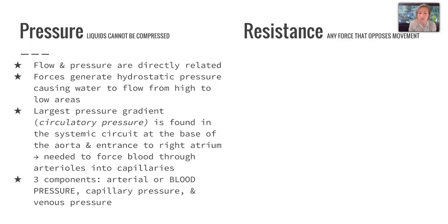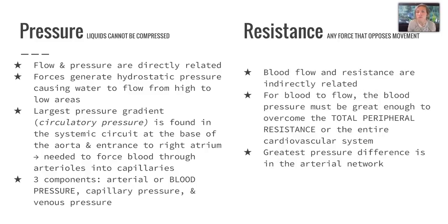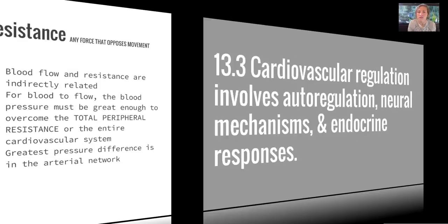There are three components of circulatory pressure: arterial or blood pressure, capillary pressure, and venous pressure. Resistance is any force that opposes movement, and blood flow and resistance are indirectly related — increased blood flow decreases resistance and vice versa. For blood to flow, the blood pressure must be great enough to overcome the total peripheral resistance of the entire cardiovascular system. The greatest pressure difference is going to be in the arterial network, and we'll talk more about these two things in class.